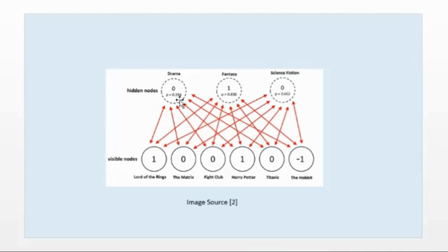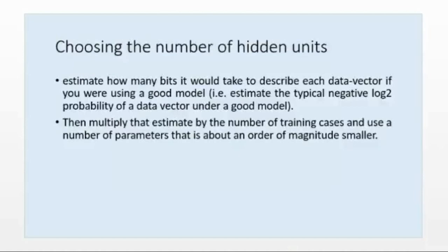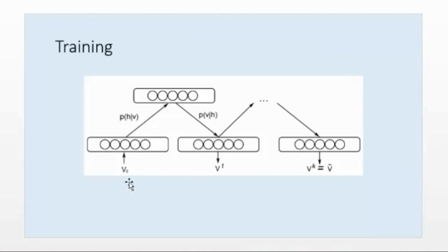The probability P(h|v) is given as, for example, 0.0354 for drama and 0.838 for fantasy. Once we compute these hidden node probability values, we use them to reconstruct back the visible sample — one, zero, zero, one, zero — getting another probability distribution. This is the first iteration: from v-naught (the initial value) we compute the hidden probabilities, and from there we compute v-one.